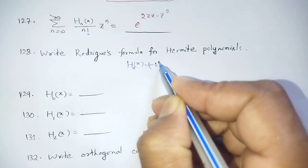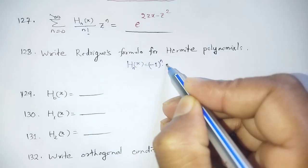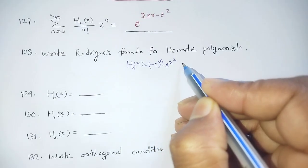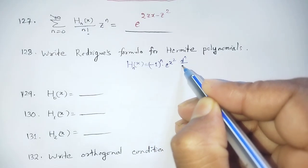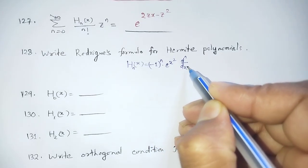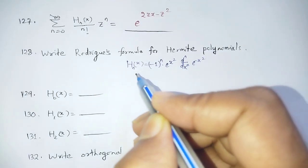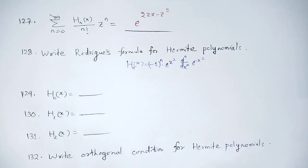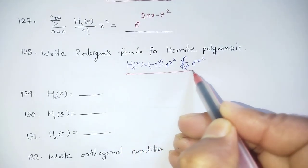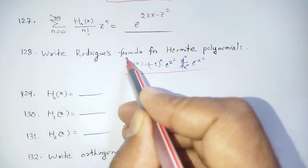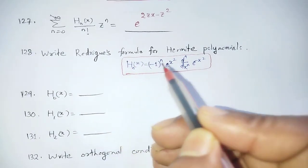The Rodrigue formula for Hermite Polynomial is: Hn(x) = (-1)^n · e^(x²) · (d^n/dx^n) e^(-x²). This is used to derive the Hermite Polynomials.